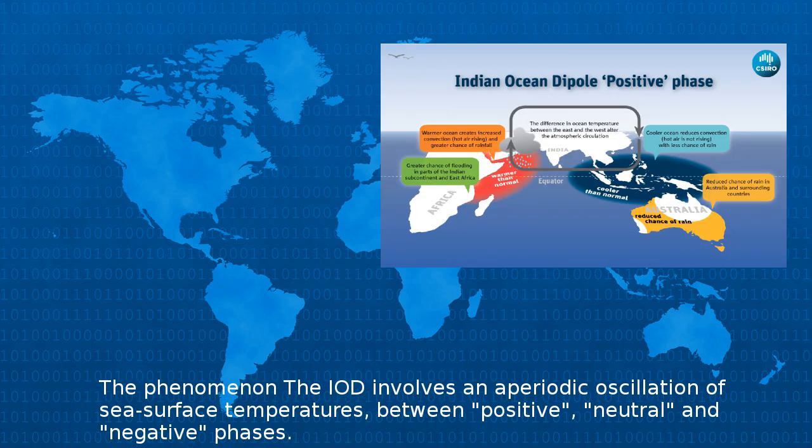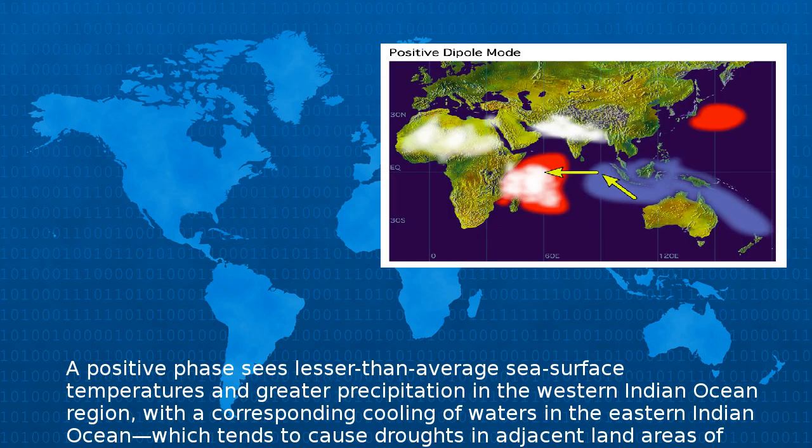The IOD involves an aperiodic oscillation of sea surface temperatures between positive, neutral, and negative phases. A positive phase sees lesser than average sea surface temperatures and greater precipitation in the western Indian Ocean region, with a corresponding cooling of waters in the eastern Indian Ocean.